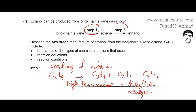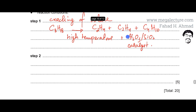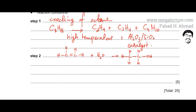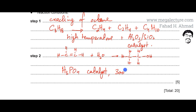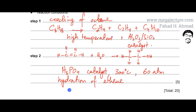Moving to step 2: the ethene molecule is converted into an ethanol molecule. This is the addition reaction of ethene, where it reacts with a water molecule to produce ethanol. The double bond becomes saturated, converting to a single bond as OH and H are added. The conditions for this reaction are a phosphoric acid (H3PO4) catalyst, a temperature of 300 degrees Celsius, and a pressure of 60 atmospheres.